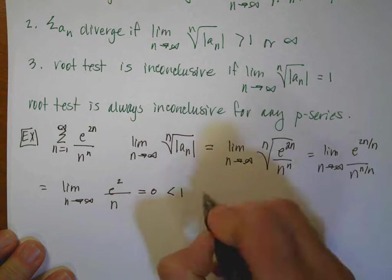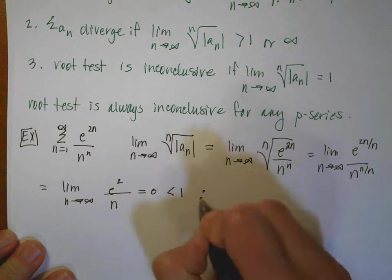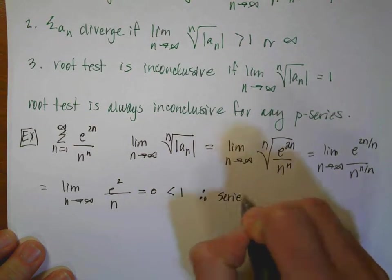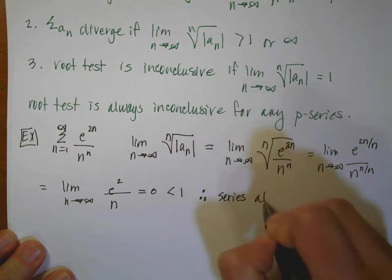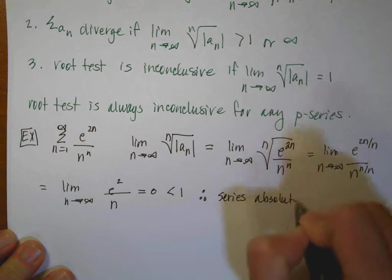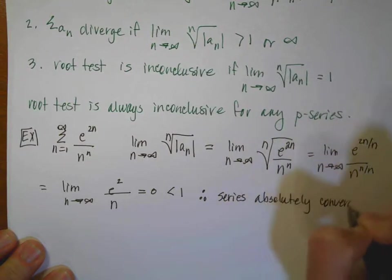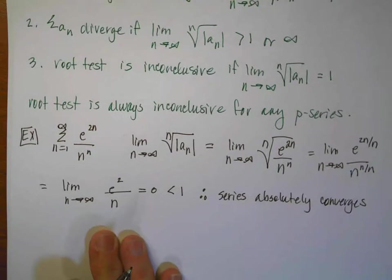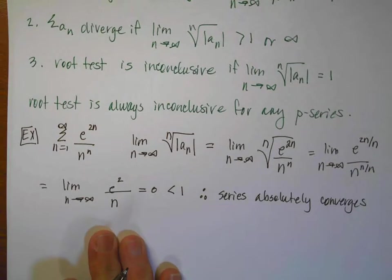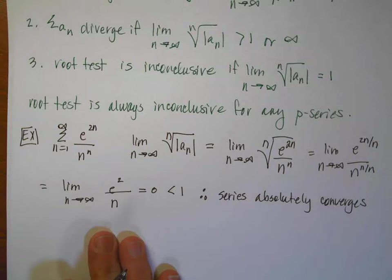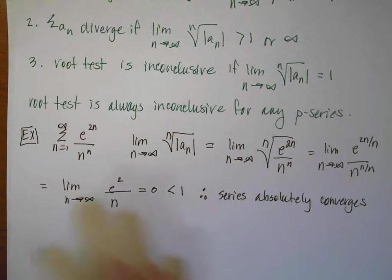And because we have a constant divided by n, the degree in the denominator is higher, so it's going to equal 0. Zero is less than 1. Therefore, the series absolutely converges. And that's done — that example is fairly straightforward.